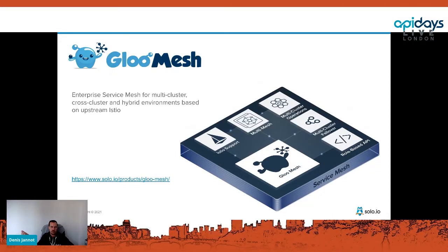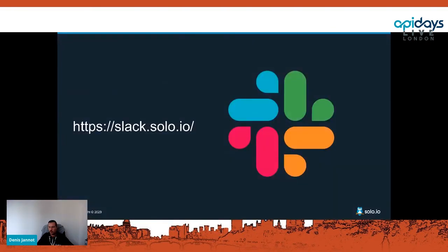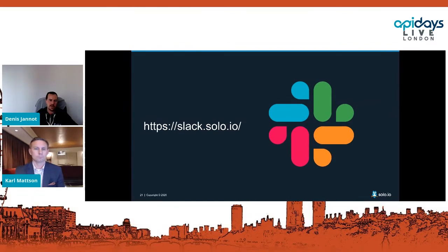We are very active in the Istio community and have a management plane for Istio, especially useful when you have multiple Istio clusters. Part of that is Gloo Mesh Gateway, which takes all the features you've seen in Gloo Edge and makes them available in the Istio ingress gateway. Everything described so far is available in Kubernetes without Istio, but also with Istio. Gloo Portal can create configuration for either Gloo Edge or Gloo Mesh Gateway. If you have questions, join us at slack.solo.io.